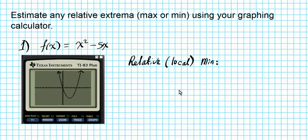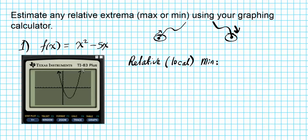Minimums are interior low points, but if you're ascending or descending to an endpoint, those are local minima too — in your neighborhood they are the lowest point. The endpoint scenario doesn't apply here because the function increases forever. However, we do have a valley in the interior of the graph, and that is a local minimum.